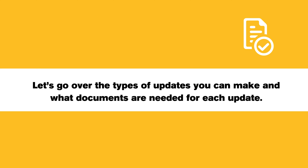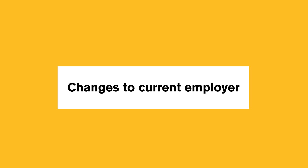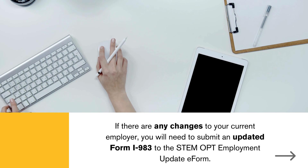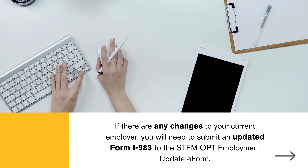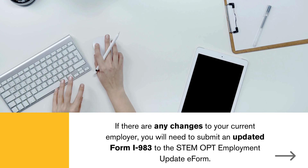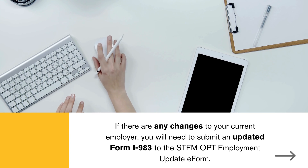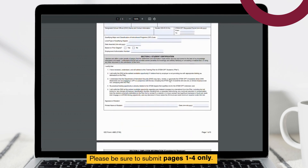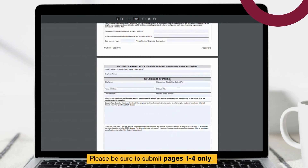Let's go over the types of updates you can make and what documents are needed for each update. Changes to current employer: if there are any changes to your current employer, you will need to submit an updated Form I-983 to the STEM OPT Employment Update e-form. Please be sure to submit pages 1 to 4 only.